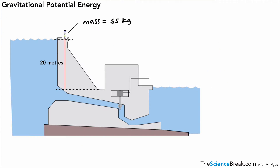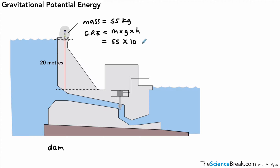The next example is very similar for more practice. We've got a structure called a dam, which holds back water. The same person of 55 kg is standing at the top of this dam at a height of 20 metres. Using the equation: 55 times 10 times 20 gives us 11,000 joules, or 11 kilojoules — that's the gravitational potential energy store of this person at the top of the dam.